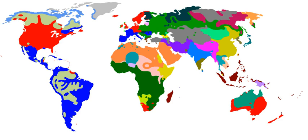The enumeration of languages and dialects can easily be taken into the five-digit range. The Linguisphere Observatory has a database with more than 32,800 coded entries and more than 70,900 linguistic names.